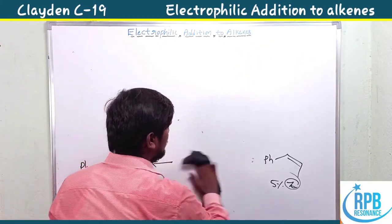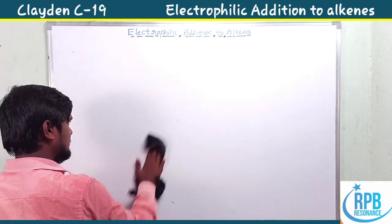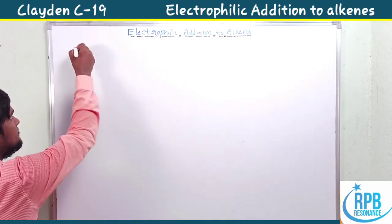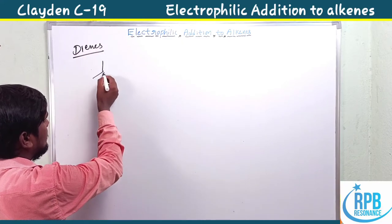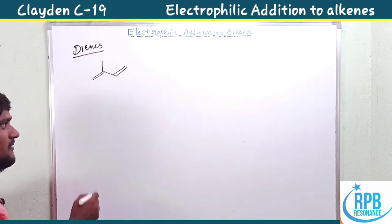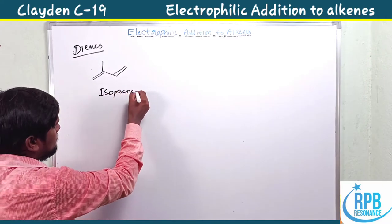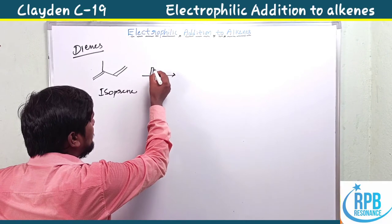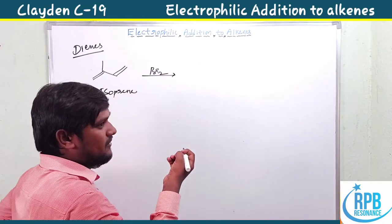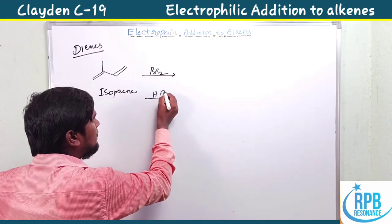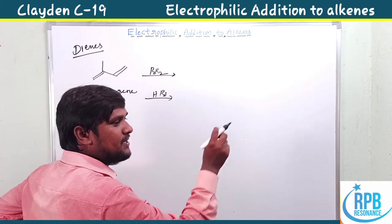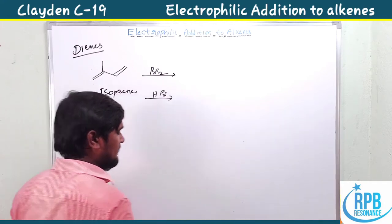Now let's move on to electrophilic addition to dienes — important for competitive exams. The examples are 1,3-butadiene and 2-methyl-1,3-butadiene, also called isoprene — a previous year exam question. In the presence of bromination or HBr, where does protonation occur and where does Br⁻ attack? Let's discuss these two reactions one by one.